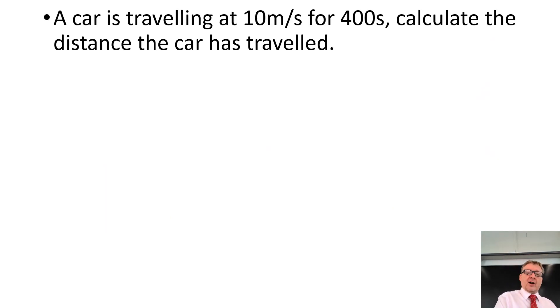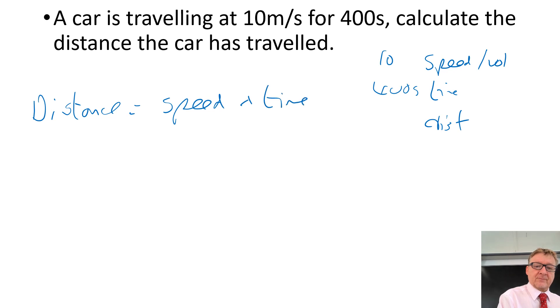A car travelling at 10 metres per second. So that's speed or velocity at 10 metres per second, time 400 seconds. Calculate the distance. So I've found my formula. Distance equals speed times time. Distance in metres, speed in metres per second, time in seconds. So the speed is 10 multiplied by 400 seconds equals 4,000 metres.